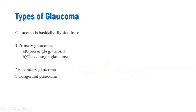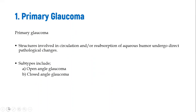The types of glaucoma include primarily open angle glaucoma and closed angle glaucoma, which are the two most common forms of primary glaucoma. We also have secondary glaucoma and congenital glaucoma. We will focus on the primary glaucoma types, which occur when there is a structural problem in the circulation or reabsorption of aqueous humor.